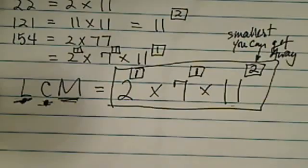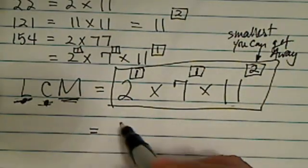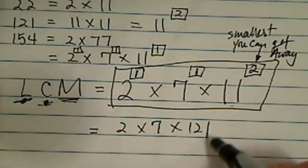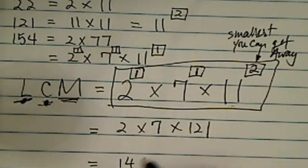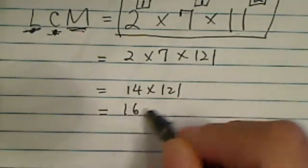You don't want a big number, but you can't put the smallest number either. So in our case, we have 2 times 7 times 121, and this is really 14 times 121. If you want to do it in your calculator, the number come out to be 1694.